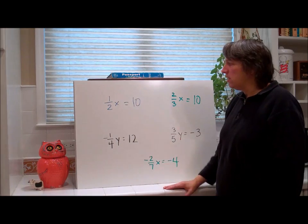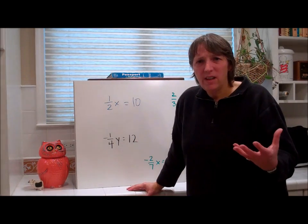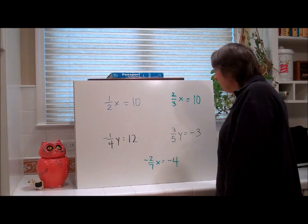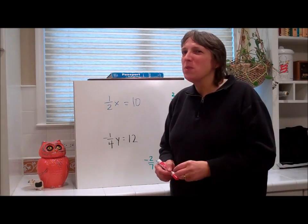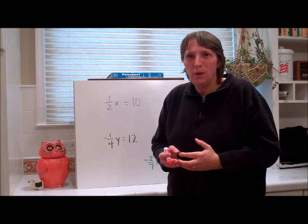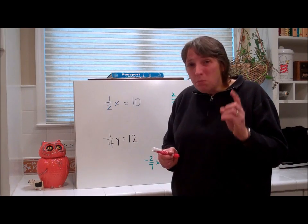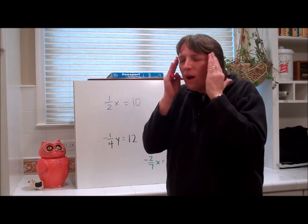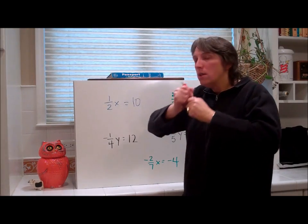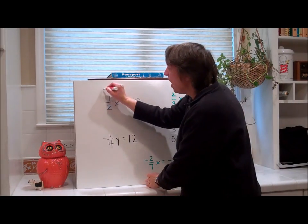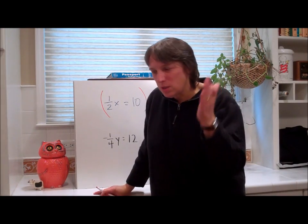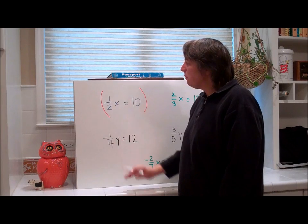One half x equals 10. We're taking half of x — that's division. Well, how do you undo that? You have to go back to reciprocals with fractions. When we're dividing with fractions, what do we really do? We multiply by the reciprocal. Whenever you're dividing, you multiply by the reciprocal. We're going to show giant parentheses — and remember, parentheses show multiplication. That's what we've been building up to. What's the reciprocal of 1 half?